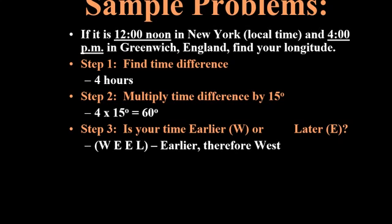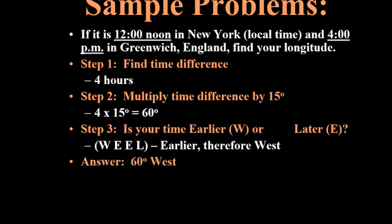Step three: determine whether that is 60 degrees east or 60 degrees west. Looking back at the problem, 12 noon local time is earlier than 4 p.m. in Greenwich. Because it's earlier, we apply WHEEL — West Early, East Later — so we are in the west. Therefore, our line of longitude is 60 degrees west.